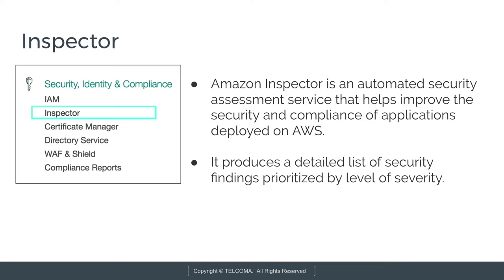Inspector also produces a detailed list of security findings, prioritized by the level of security. For example, built-in rules include checking whether remote root login is enabled or not, and whether certain software versions are installed. These rules are regularly updated by AWS security researchers. Inspector checks those rules to ensure they are working properly, with security prioritized by level — level one, level two, and so on.